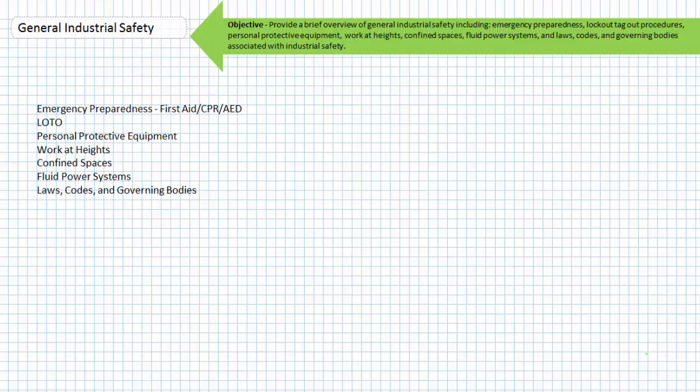In conclusion, this lecture provided a brief overview of general industrial safety. We discussed emergency preparedness, first aid, CPR, AED training, lockout and tagout procedures, personal protective equipment, as well as special case industrial safety scenarios like work at heights, confined spaces, and fluid power systems. Finally, we discussed laws, codes, and governing bodies associated with industrial safety. Remember to review these concepts as often as you need to really drive it home.